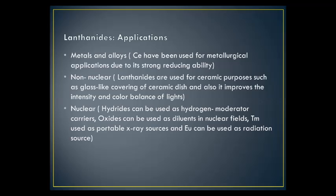The pure metals of the lanthanides have little use; however, the alloys of the metals can be very useful. For example, alloys of cerium have been used for metallurgical applications due to their strong reducing abilities. The lanthanides can also be used for ceramic purposes — the almost glass-like covering of a ceramic dish can be created with lanthanides — and to improve the intensity and color balance of arc lights. Like the actinides, the lanthanides can also be used for nuclear purposes: hydrides as hydrogen moderator carriers, oxides as diluents in nuclear fields, metals as structural components, and some elements such as Tm as portable X-ray sources, while elements such as U can be used as radiation sources.